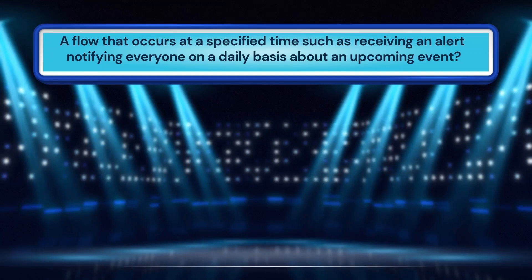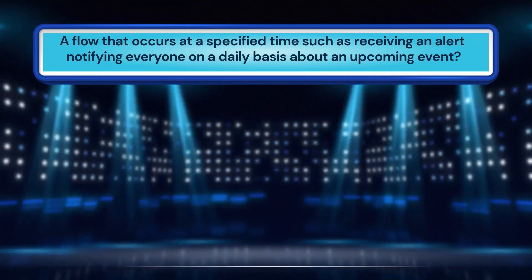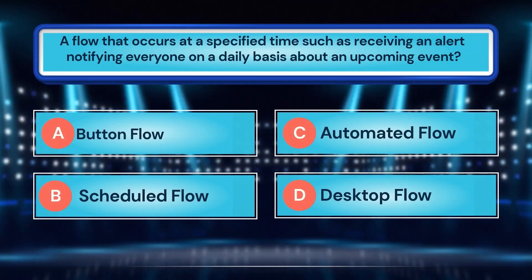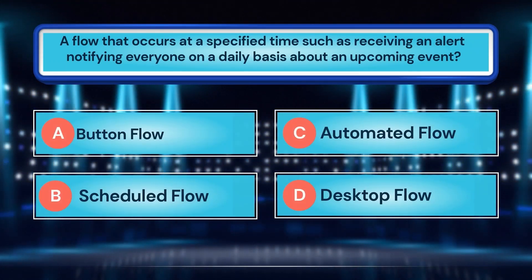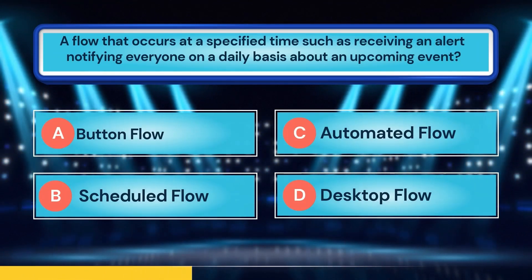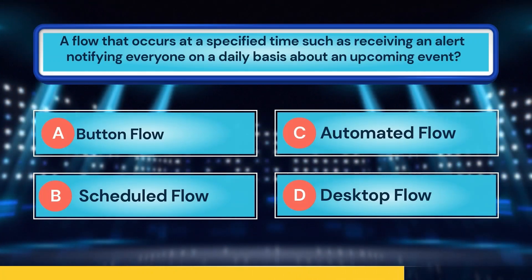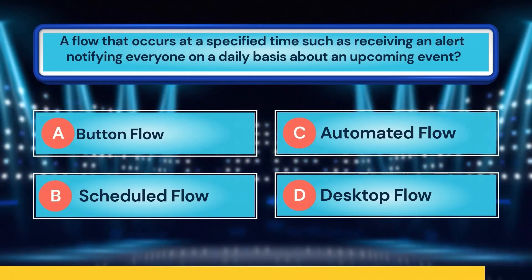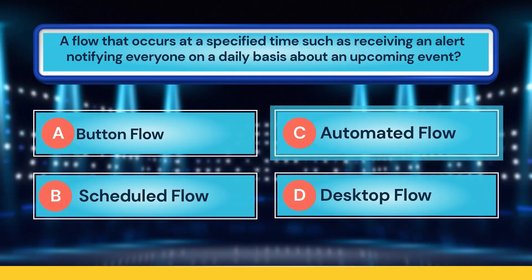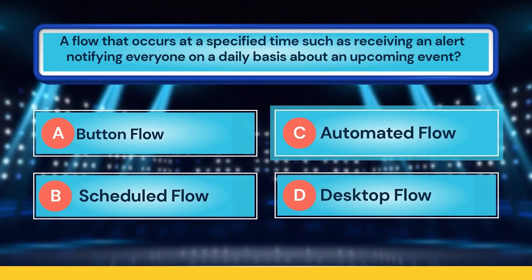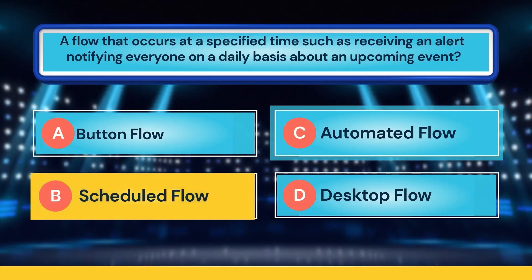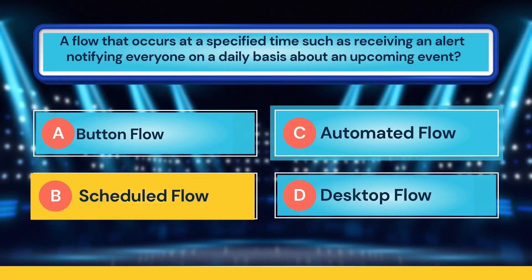A flow that occurs at a specified time, such as receiving an alert notifying everyone on a daily basis about an upcoming event. A. Button flow. B. Scheduled flow. C. Automated flow. D. Desktop flow. Time is up! The correct answer is B, scheduled flow.